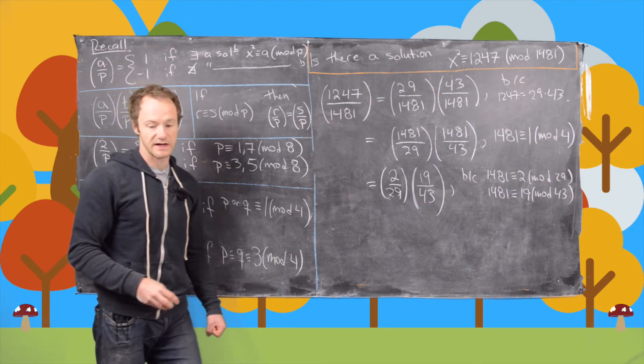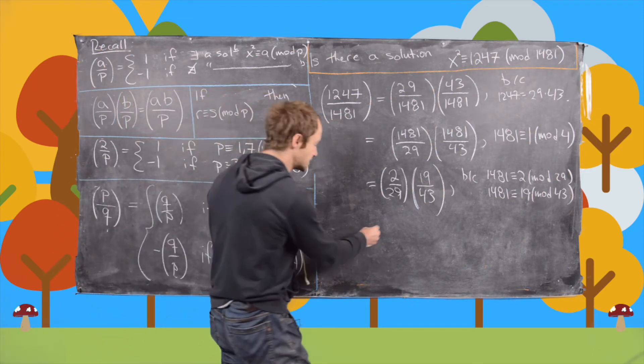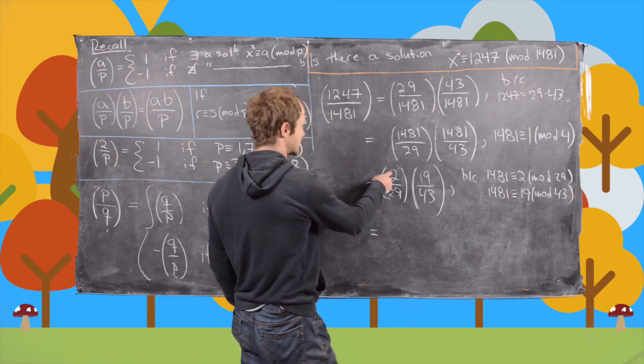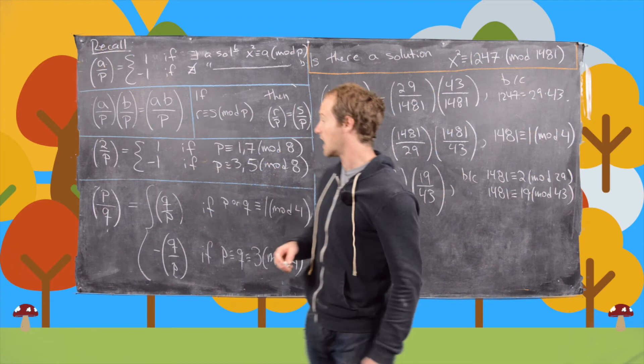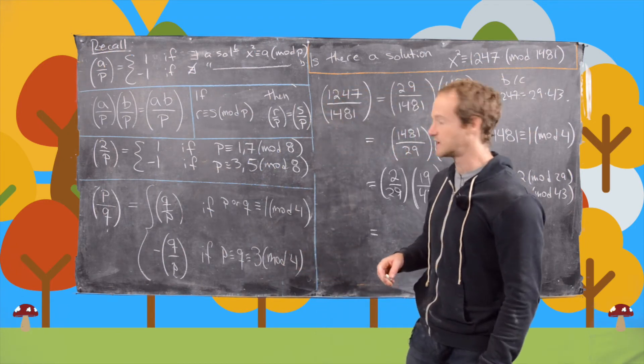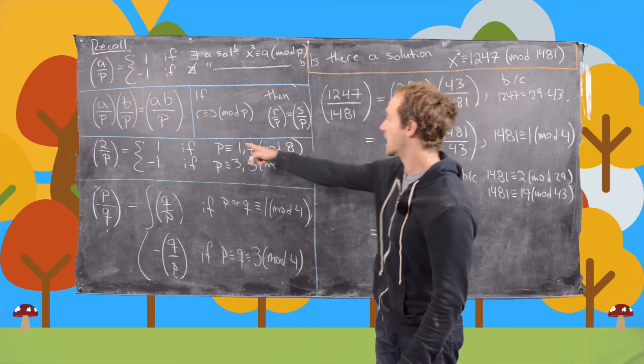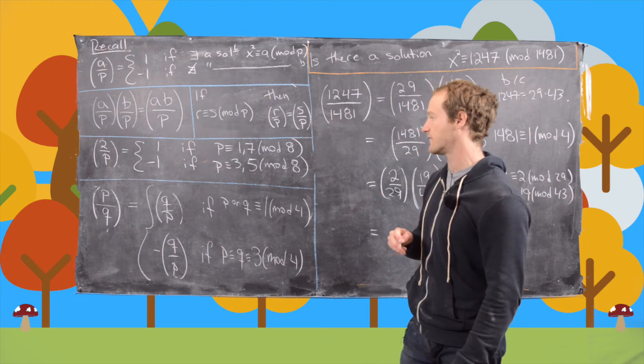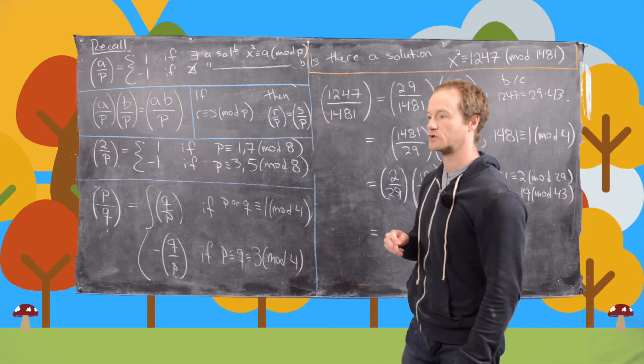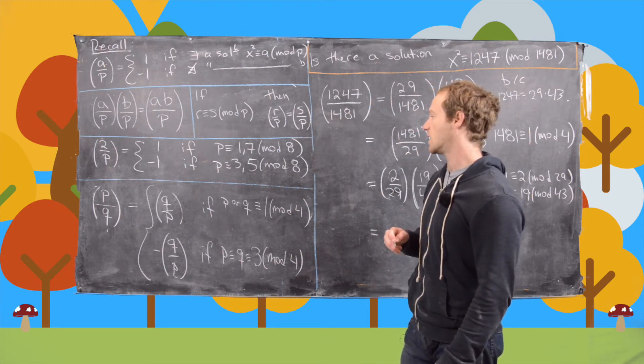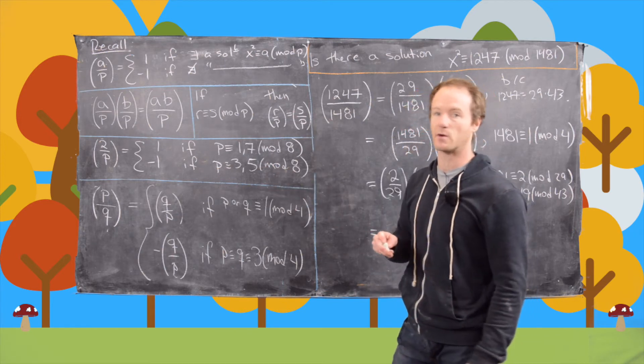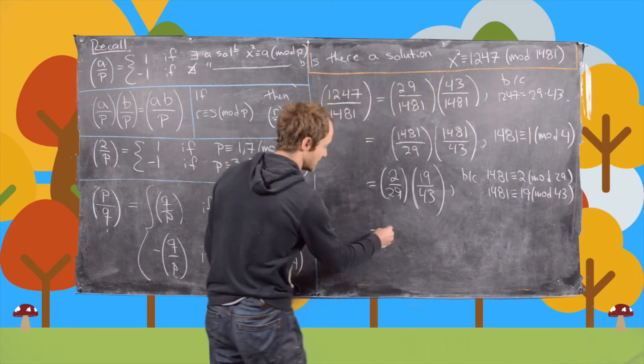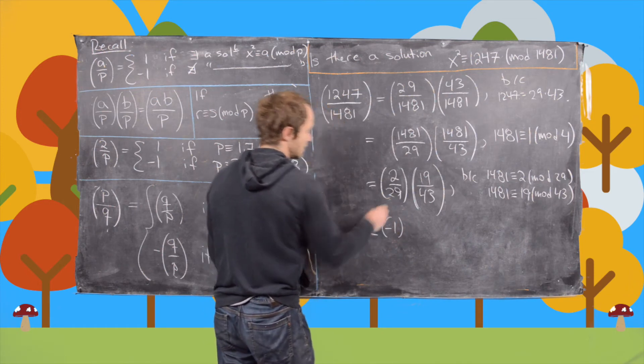And now the next thing that we'll do is the following. So we're going to answer the question is 2 a quadratic residue mod 29. And it is not. And that's because 29 is not congruent to 1 or 7 mod 8. So 29 is congruent to 5 mod 8 because it's 5 more than 24. So that means we get a minus sign from that.